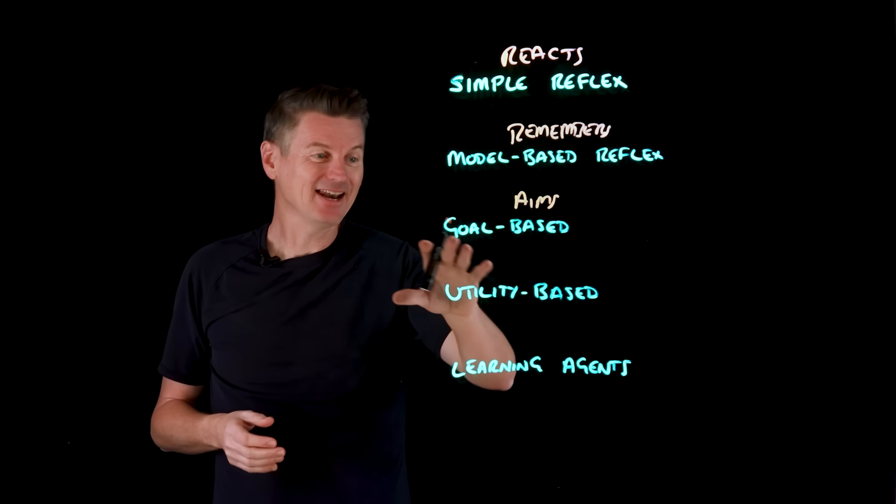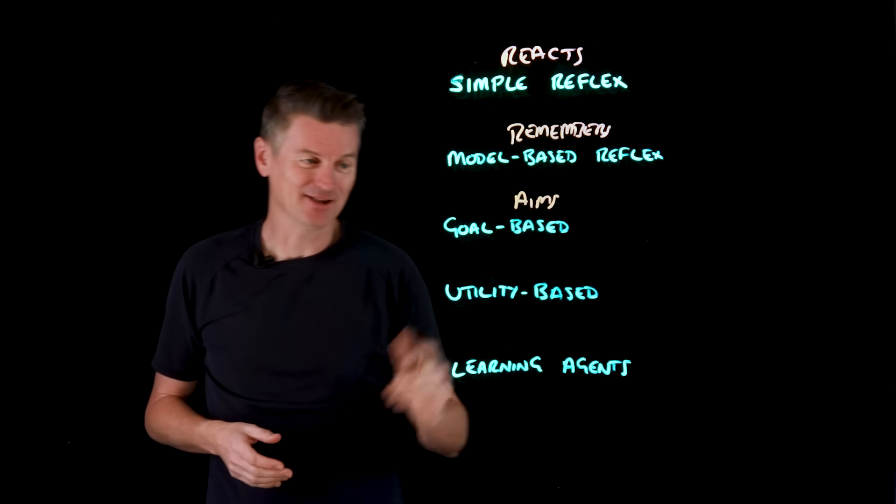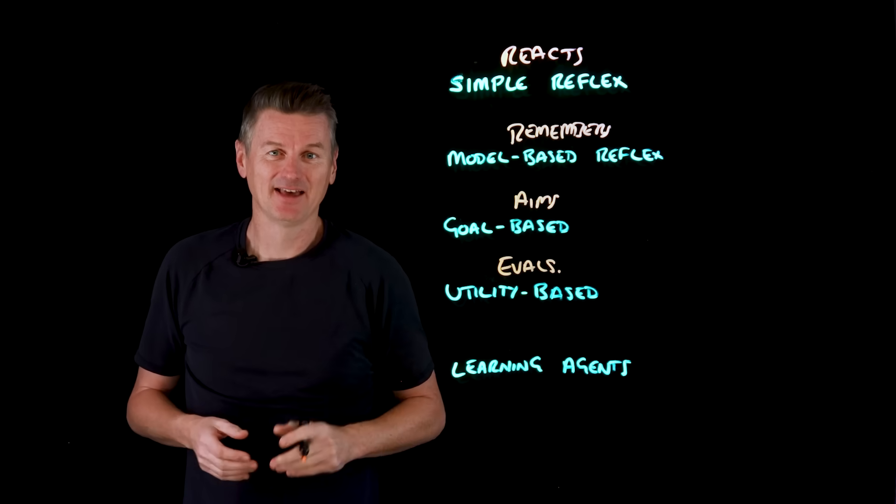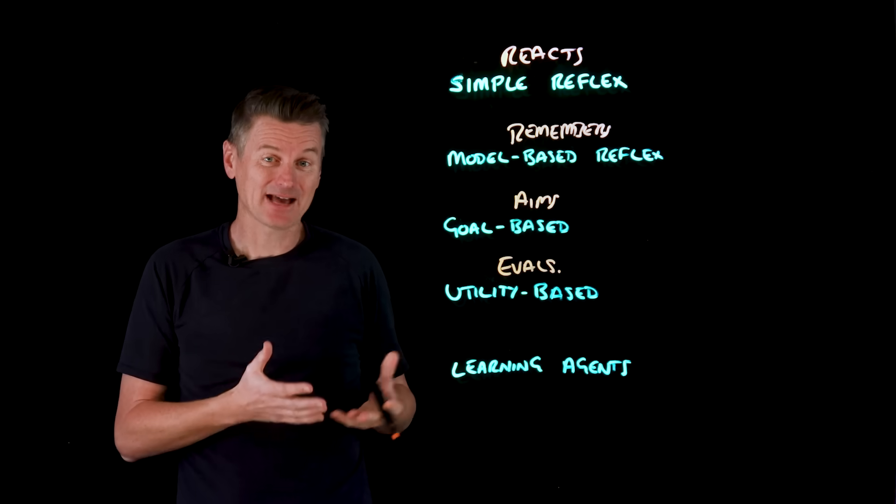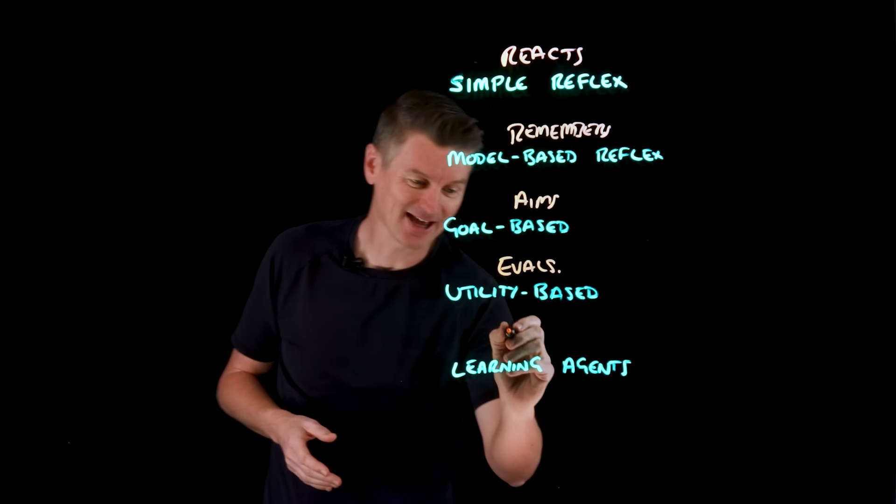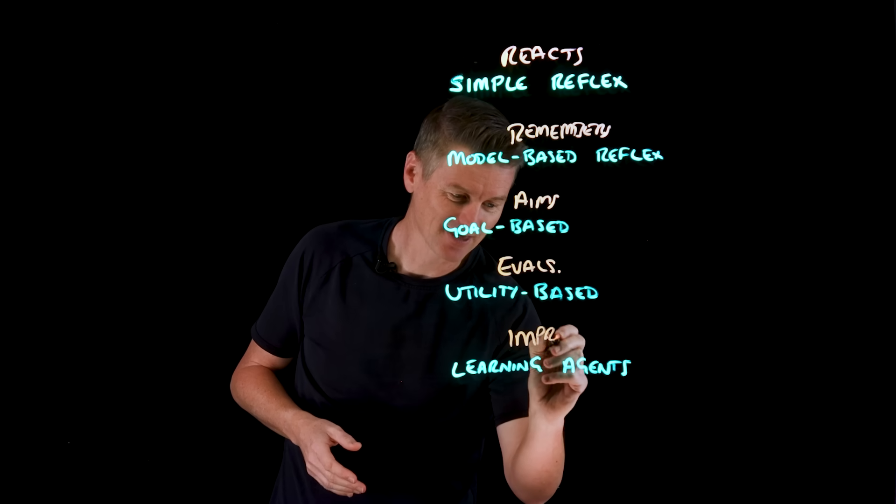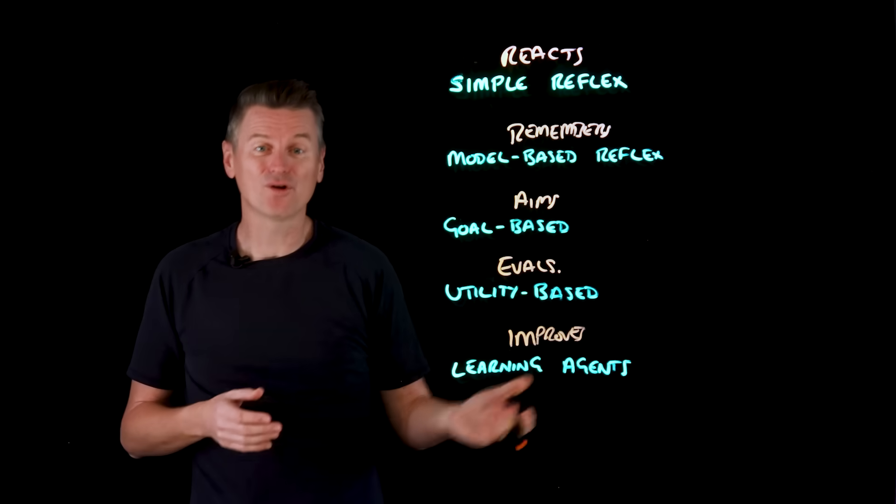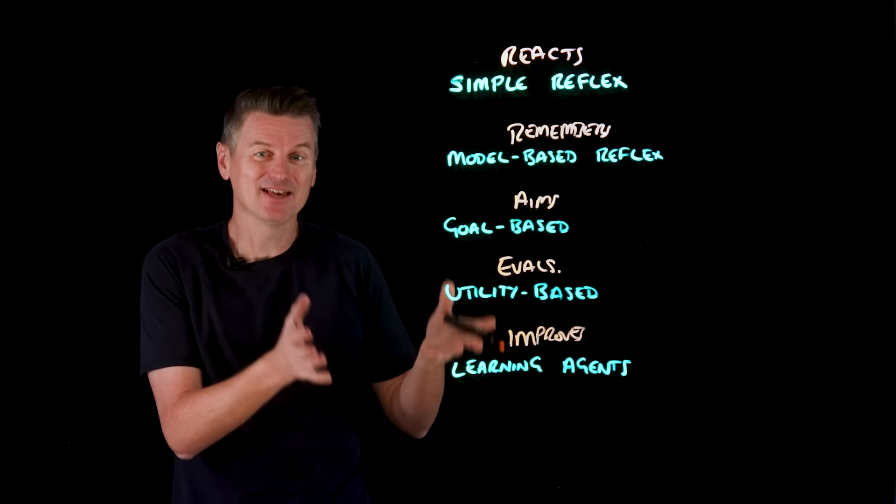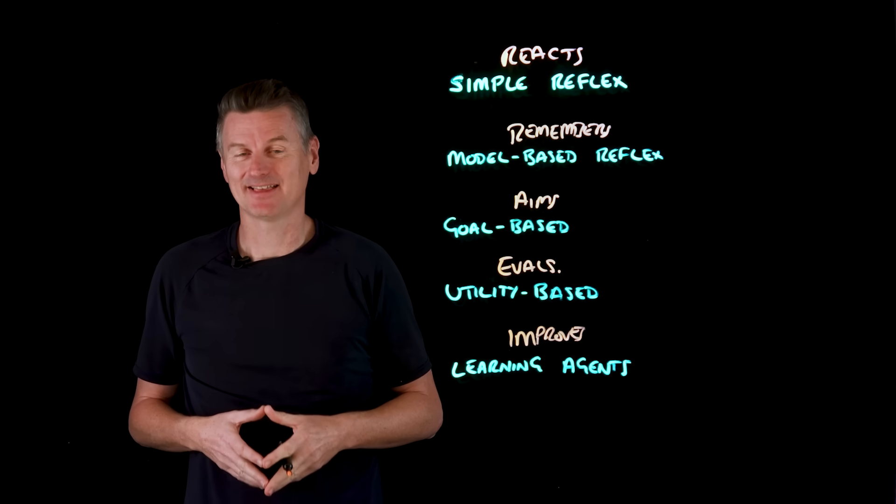Whereas, a utility-based agent, that takes a different path. It evaluates. It does that by choosing the best outcome, but requires an accurate utility function to do so. And then, a learning agent that improves by learning from experience. But this can be the slowest and most data-intensive process.